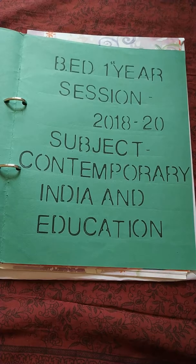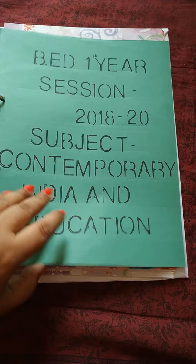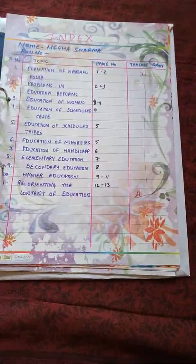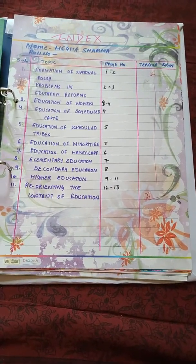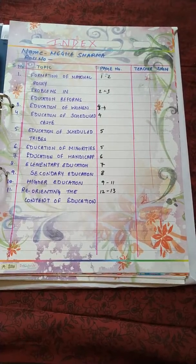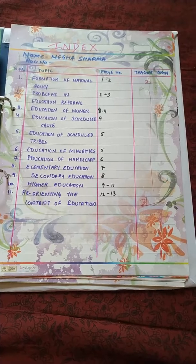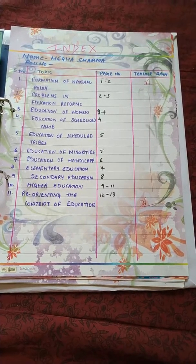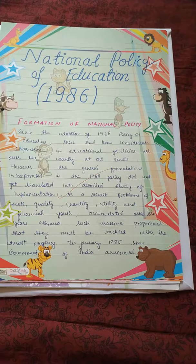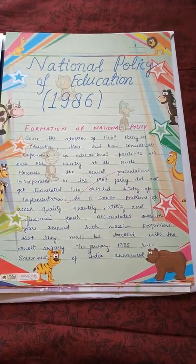Now let's proceed. You can see there is an index, and in the index all the topics are mentioned. Follow the same order as you have mentioned in your index. The topic is National Policy of Education 1986.